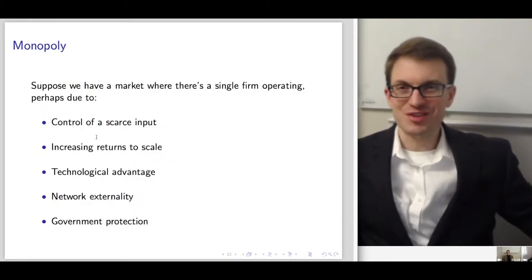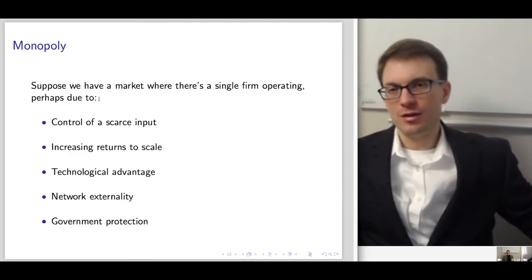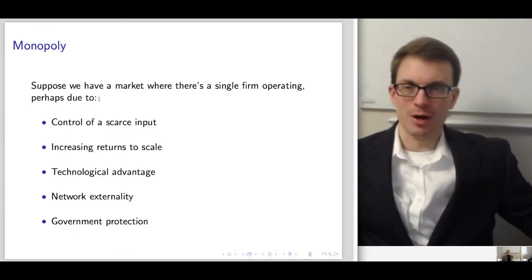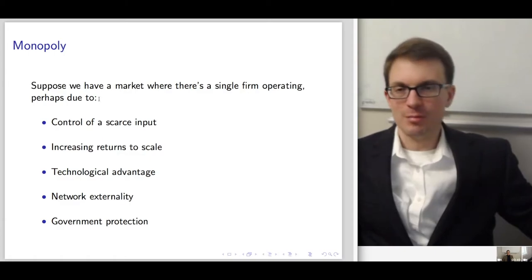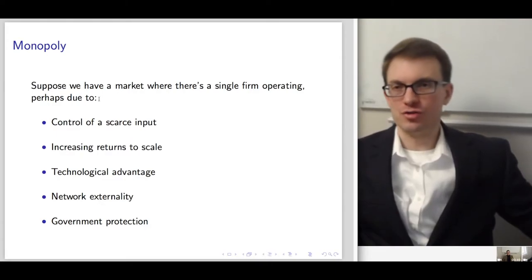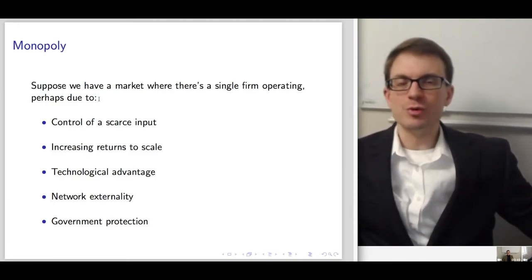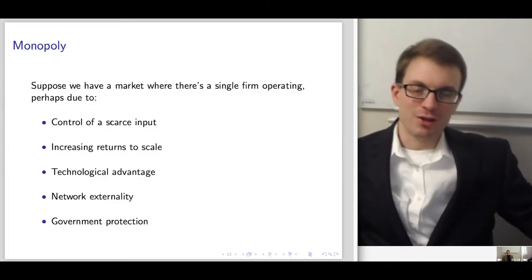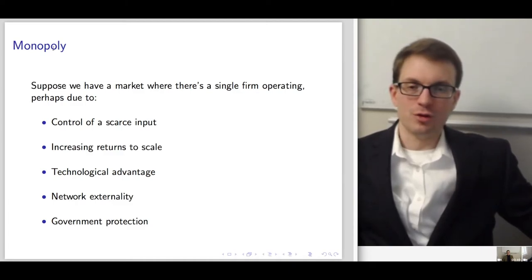Now we're going to transition to something very different — a situation where we have a monopoly, a single firm operating. We can use a lot of the same intuition for a monopoly to think about situations where firms aren't necessarily monopolies but have some substantial market power. A lot of monopoly intuition is applicable, with some necessary changes, to other market structures such as monopolistic competition and oligopoly.